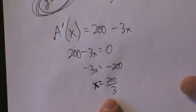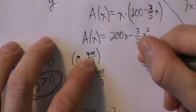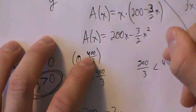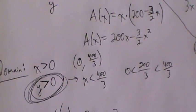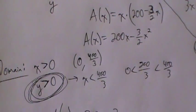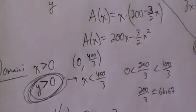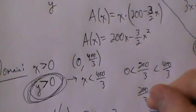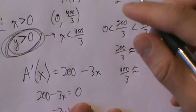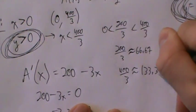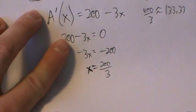We want to make sure this critical point is in the domain (0, 400/3). Is 200/3 inside this interval? Yes — 200/3 is less than 400/3 (it's half as much) and of course it's positive. In decimal terms, 200/3 ≈ 66.67 and 400/3 ≈ 133.33. So x = 200/3 is indeed in the domain — it's where the derivative is zero and it's a valid critical point.